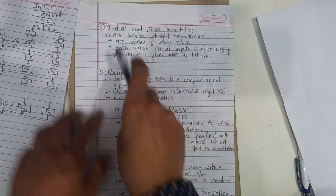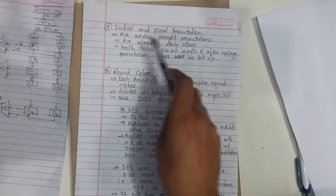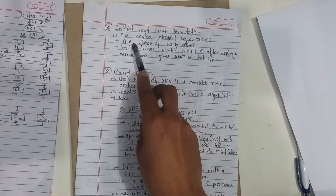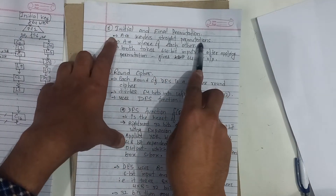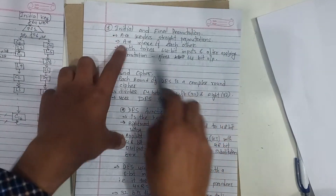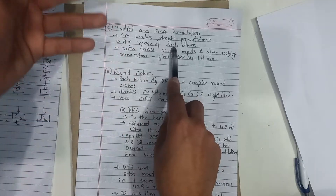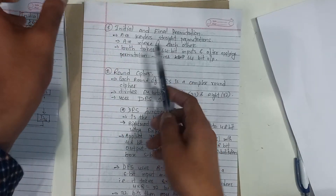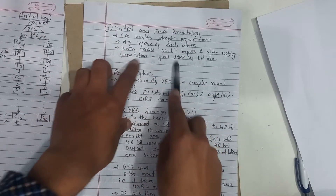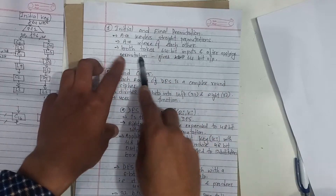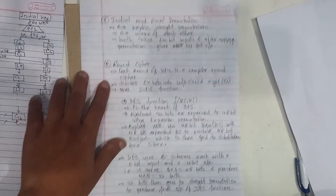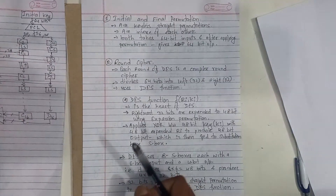Initial and final permutation are keyless straight permutations. They are inverses of each other, meaning each input maps to a unique output. Both take 64-bit inputs and after applying permutation give 64-bit output.